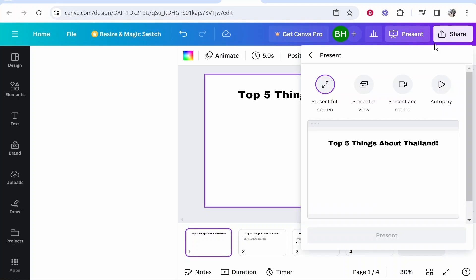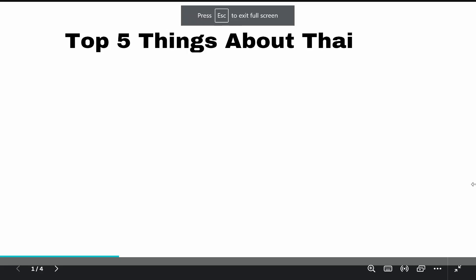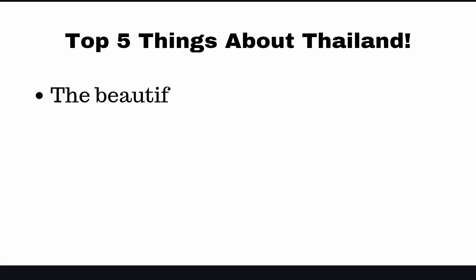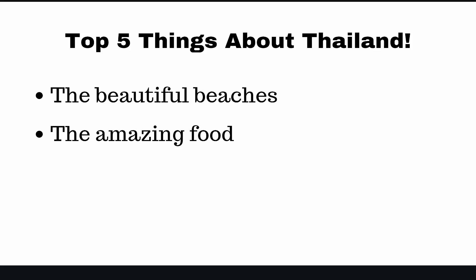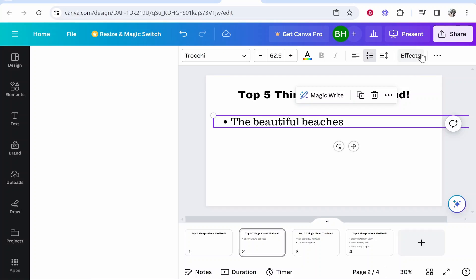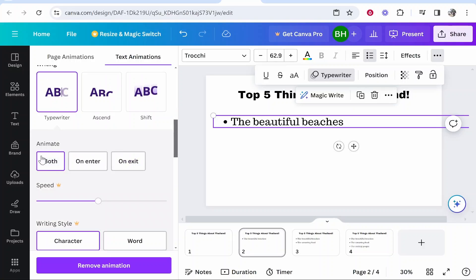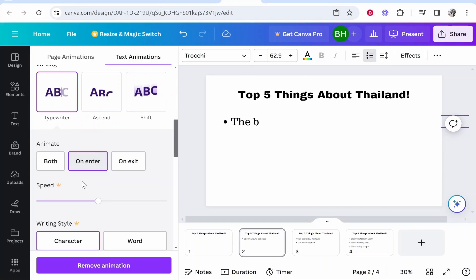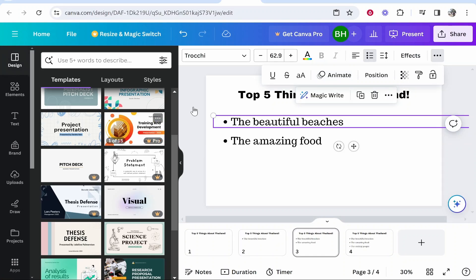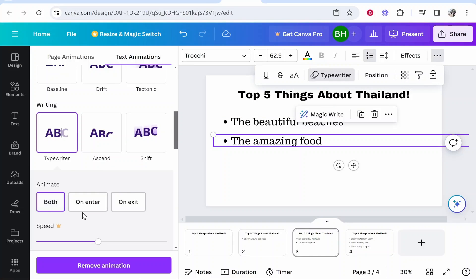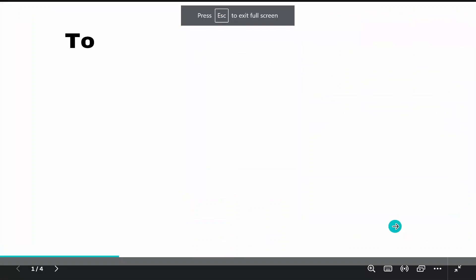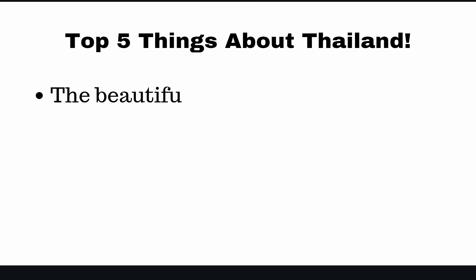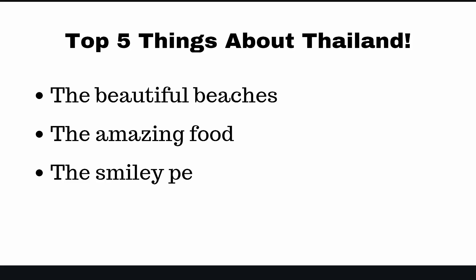Now you've got a slide for every line of text and every line is animated. Go to present and it should now work: top five things about Thailand, next slide — the beautiful beaches, next — the amazing food, and the smiley people. You might notice some animation on exit which we need to change. Go through and make sure animations only appear on entry — you can see this one is set to both, so change it to entry only. Double check all text layers and change them from both to just on entry. Let's check it out for a final look: top five things about Thailand, the beautiful beaches, the amazing food, and the smiley people.